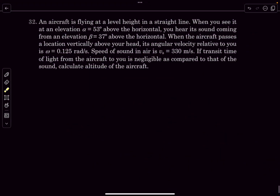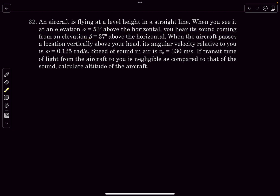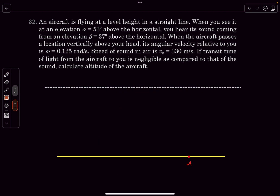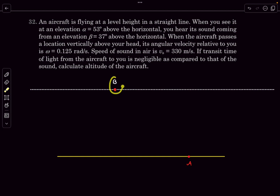Now let's discuss Question 32. An aircraft flies at a constant level height in a straight line. When you see it at an elevation of 53° above the horizontal, you hear its sound coming from an elevation of 37° above the horizontal. Let's draw a diagram: the observer is at point A, the plane is at B at height h, and it's flying to the right at speed v.